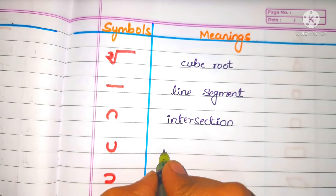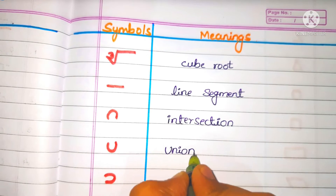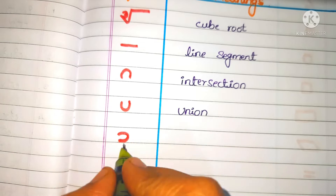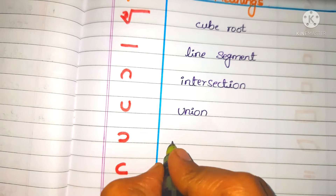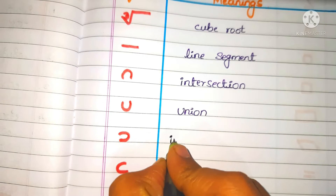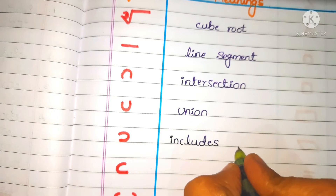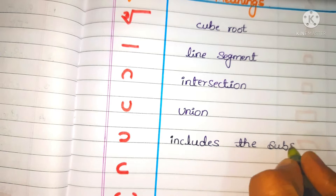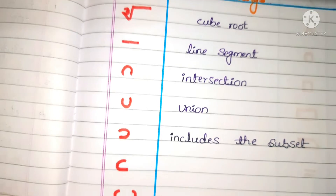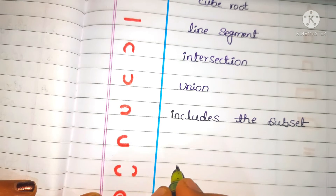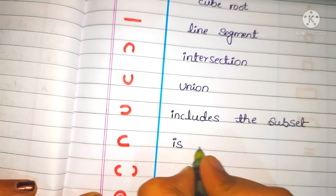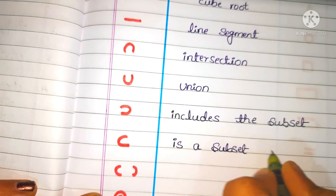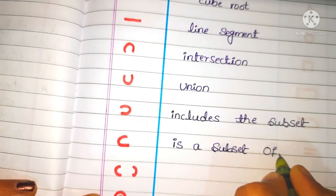Intersection. Union. Next: Includes the subset. Easy subset.